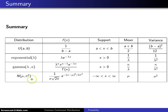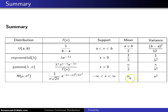The fourth distribution was the normal distribution, which is probably the best known of all continuous distributions. It is used heavily in statistics. Here is the probability density function. It has a support from minus infinity to infinity, mean mu, and variance sigma squared.